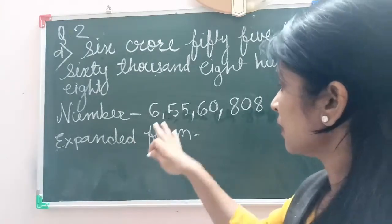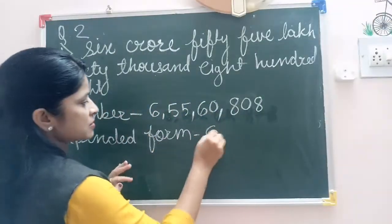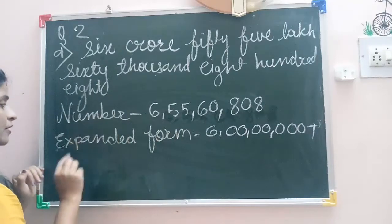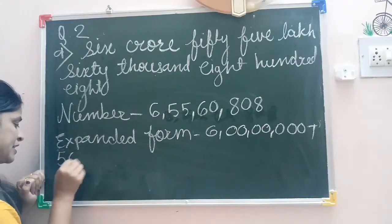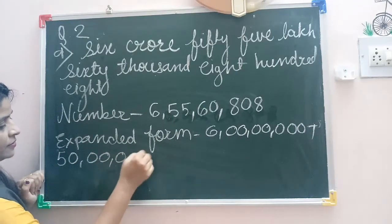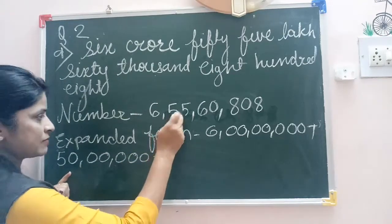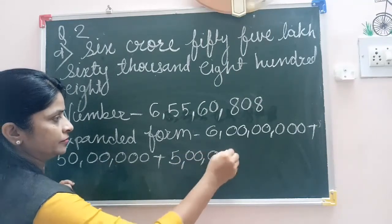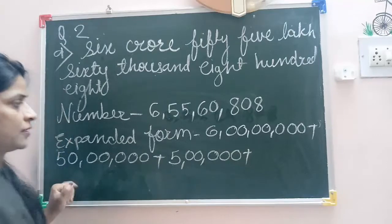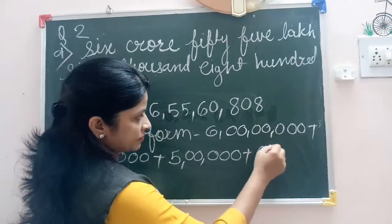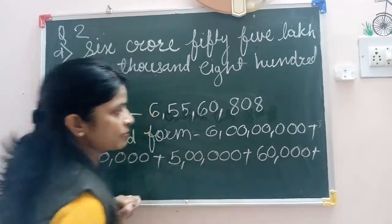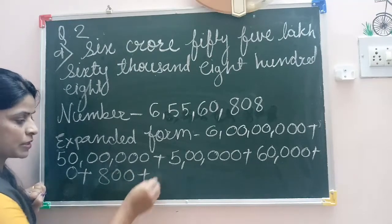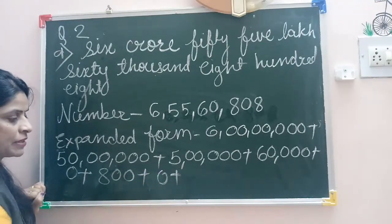Expand it again — number multiplied by the place. 6 crore. 5 multiplied by 10 lakh is 50 lakh. 5 multiplied by lakh is 5 lakh. 6 multiplied by 10,000 is 60,000. Plus 0 multiplied by 1,000 is 0. Plus 8 multiplied by 100 is 800. 0 multiplied by 10 is 0. 8 multiplied by 1 is 8. The digit in the 10s place is not given, so we put 0 there.